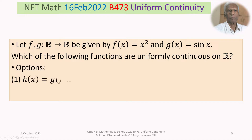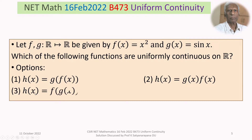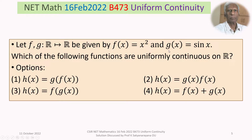We are given four options. Option 1: H(x) = g(f(x)). Option 2: H(x) = g(x) multiplied by f(x). Option 3: H(x) = f(g(x)). Option 4: H(x) = f(x) + g(x). We have to decide which of these four functions are uniformly continuous on R.